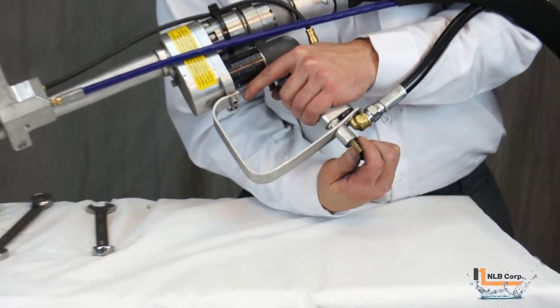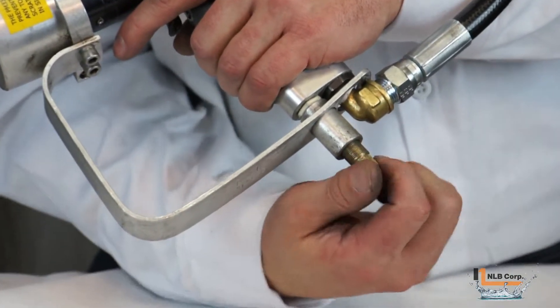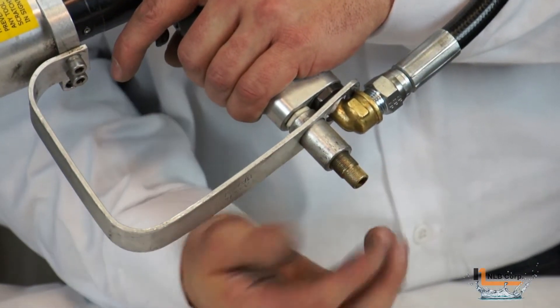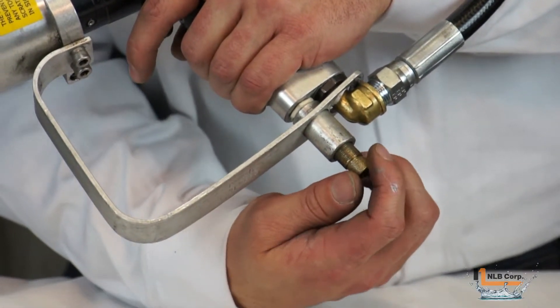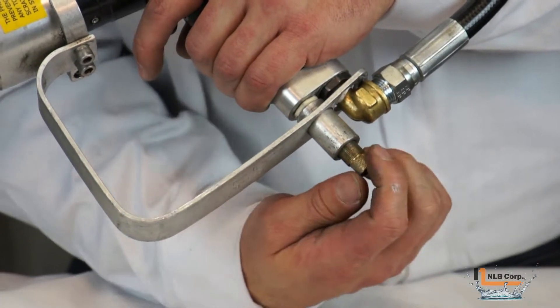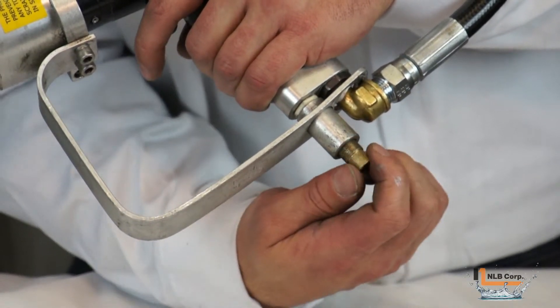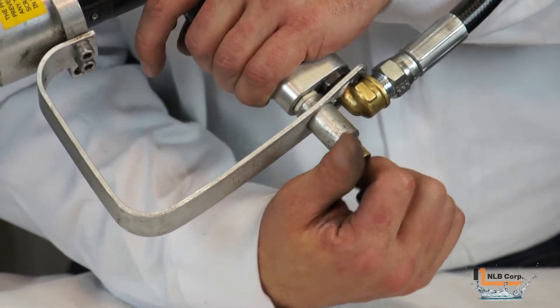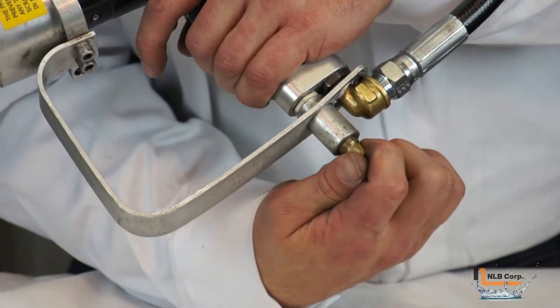The speed of the nozzle rotation is controlled via this knob located on the bottom of the hand lance. Turning the knob in a counter-clockwise motion will result in increased rotational speed, while turning it in a counter-clockwise motion will result in slower rotational speed.